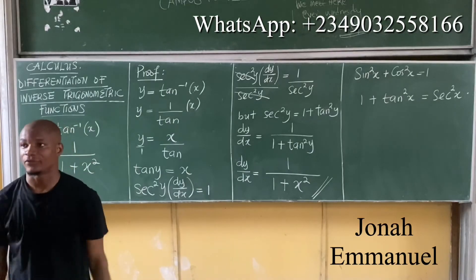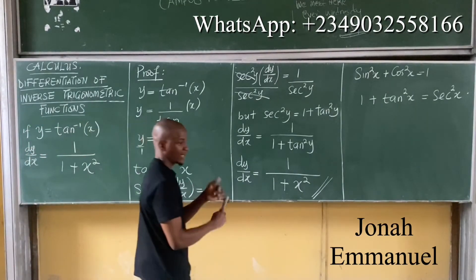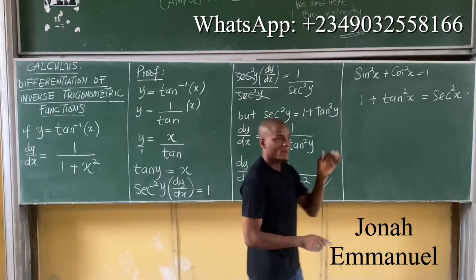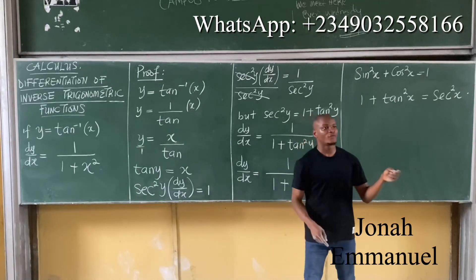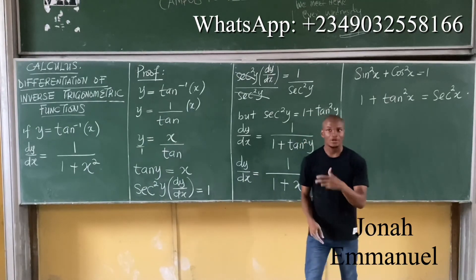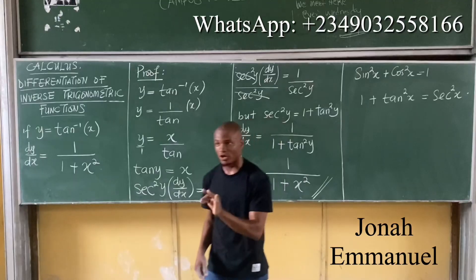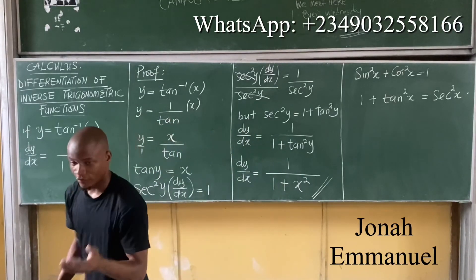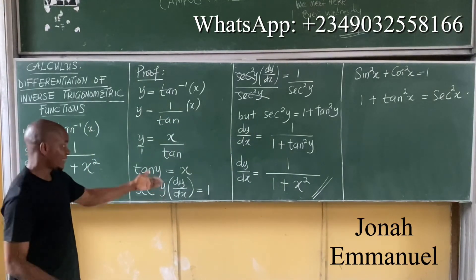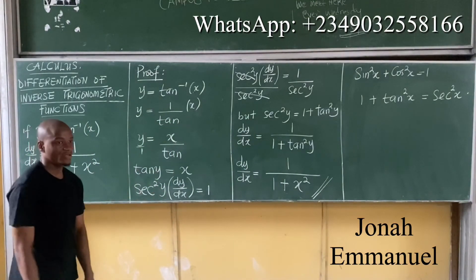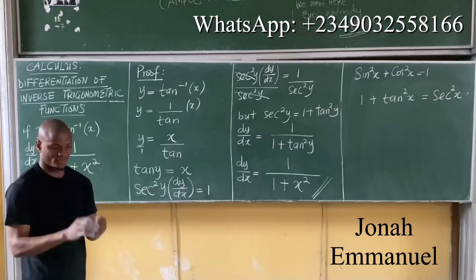So please note all three results: sine inverse gives 1 over the square root of 1 minus x squared; cos inverse gives minus 1 over the square root of 1 minus x squared; and tan inverse gives 1 over 1 plus x squared.